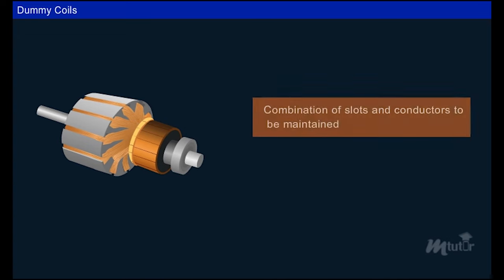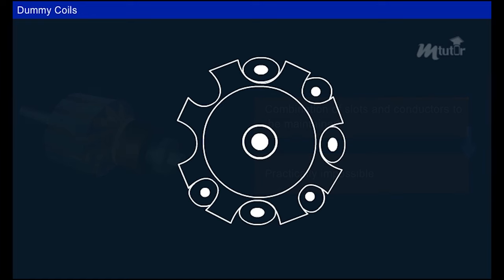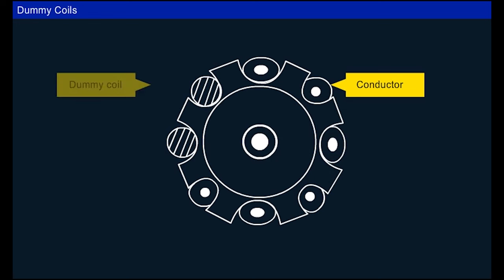For winding a wave type armature, there must be a combination of a particular number of slots and conductors in the armature. Practically it is not possible to always meet such design requirements, so to provide mechanical balance to the machine, one or more coils may be inserted in appropriate slots, electrically insulated from the other windings. Such coils are called dummy coils.